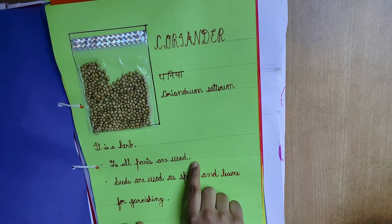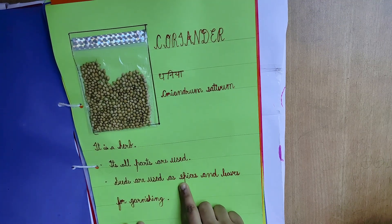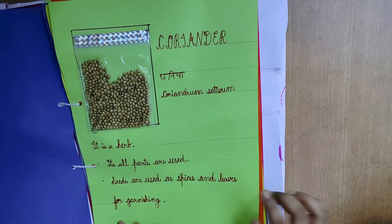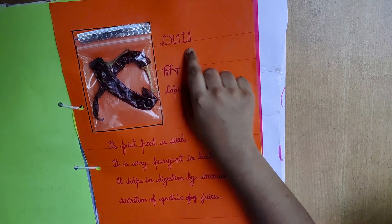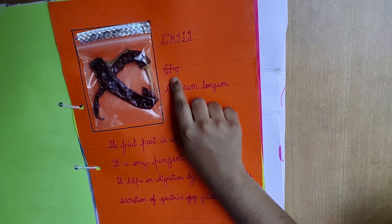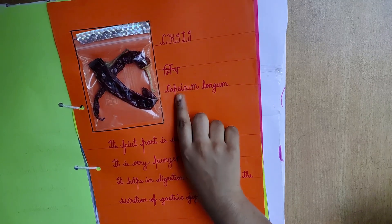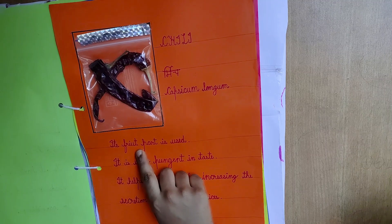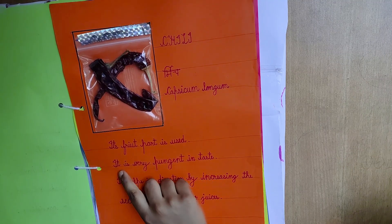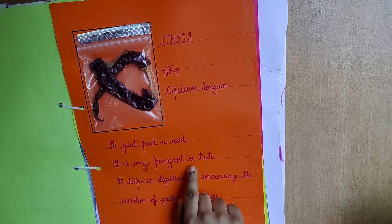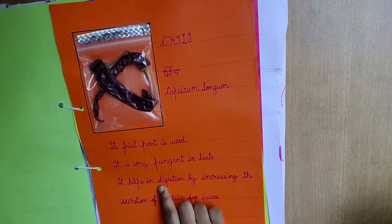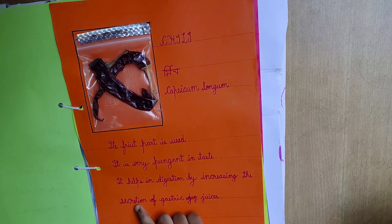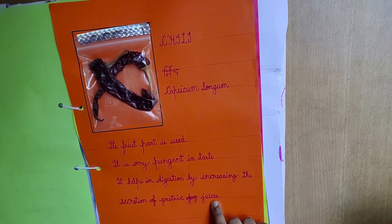Its all parts are used. Seeds are used as spices and leaves for garnishing. This is bay leaves, also known as mish in Hindi language. Its scientific name is Capsicum longa. Its root part is used. It is very pungent in taste. It helps digestion by increasing the secretion of gastric juices.